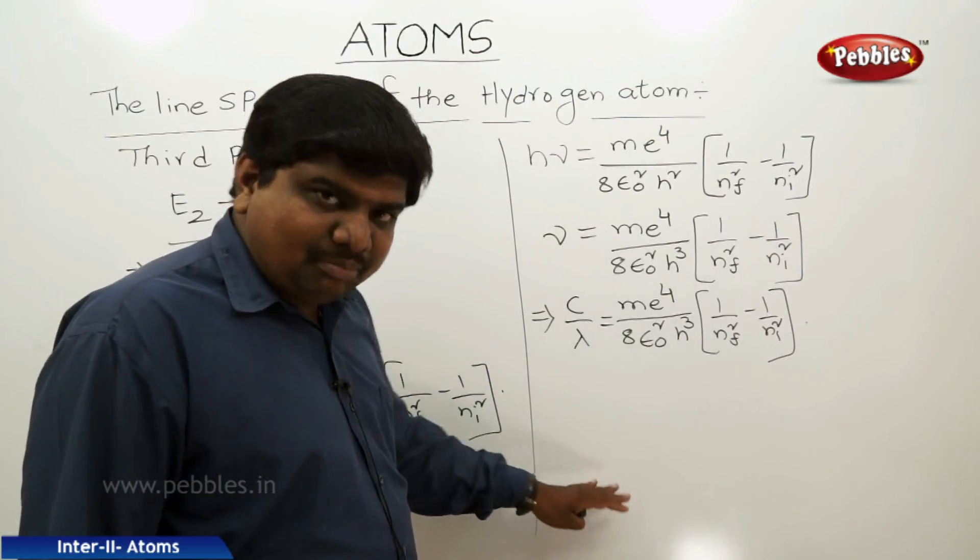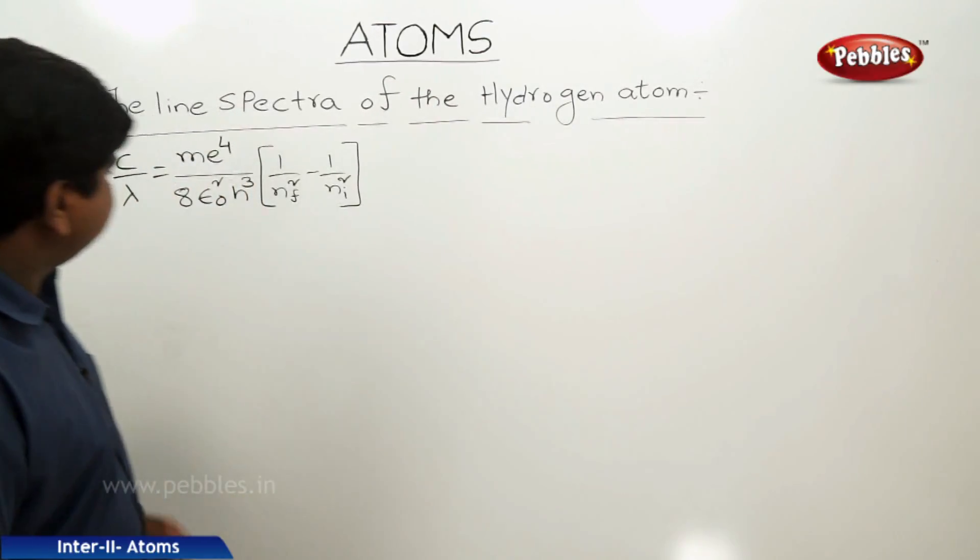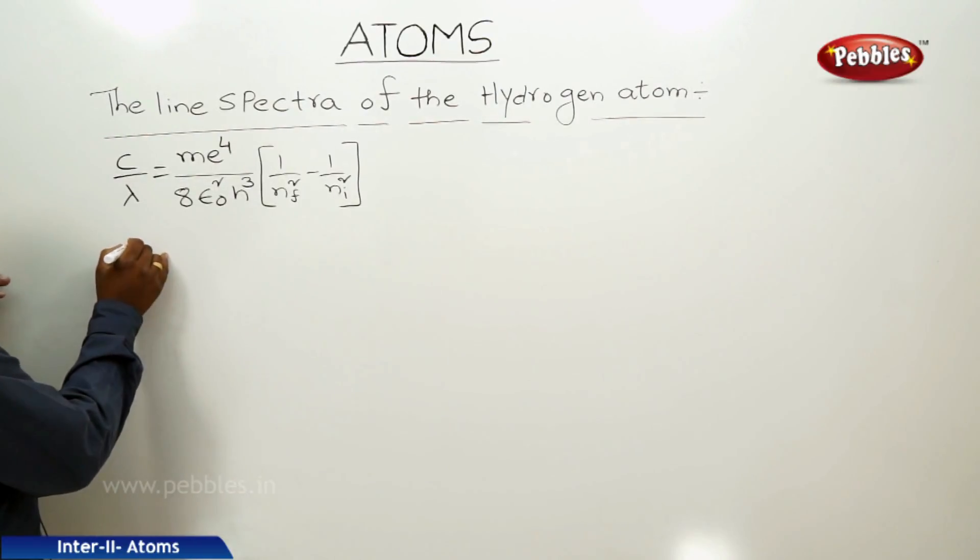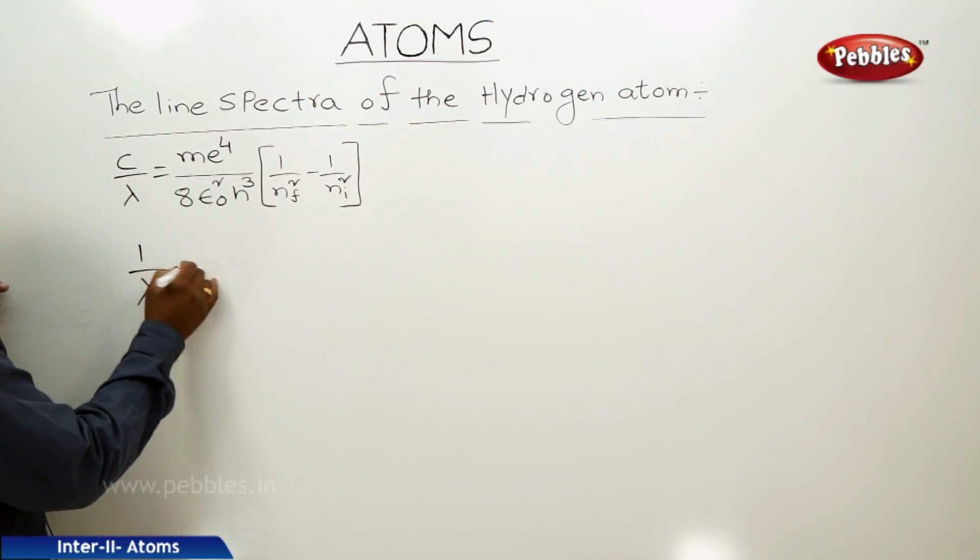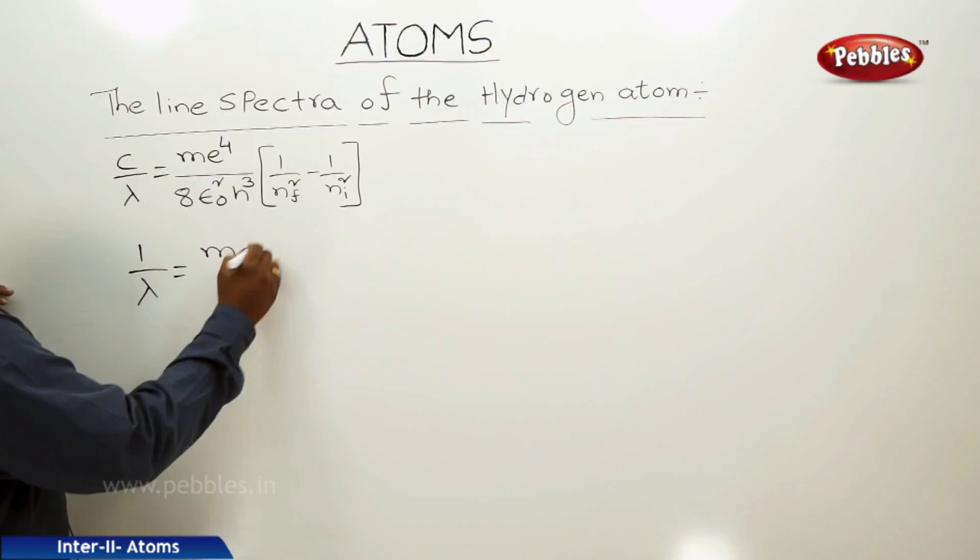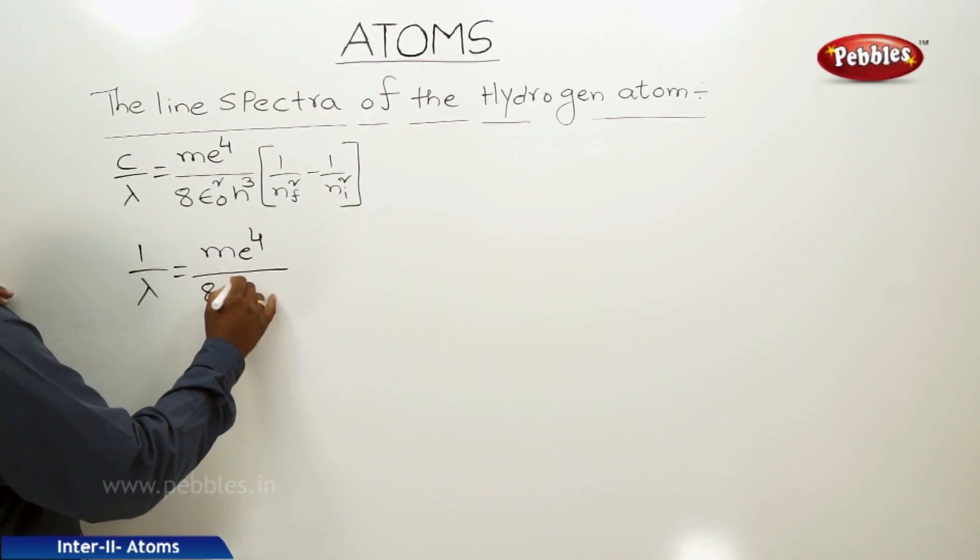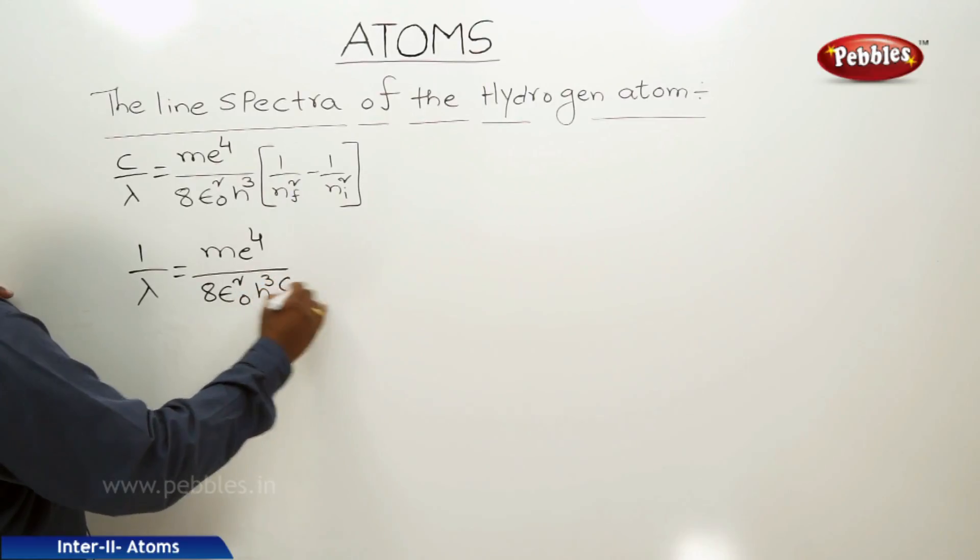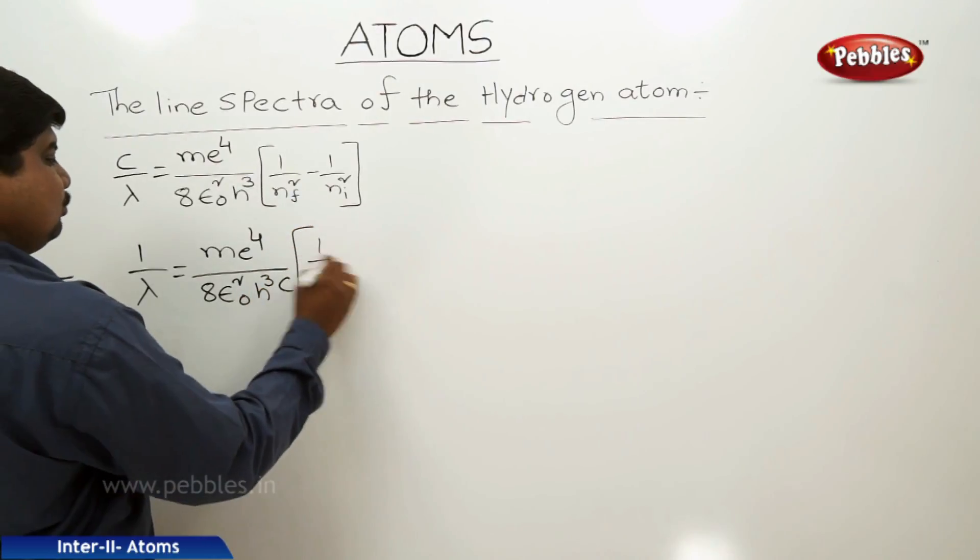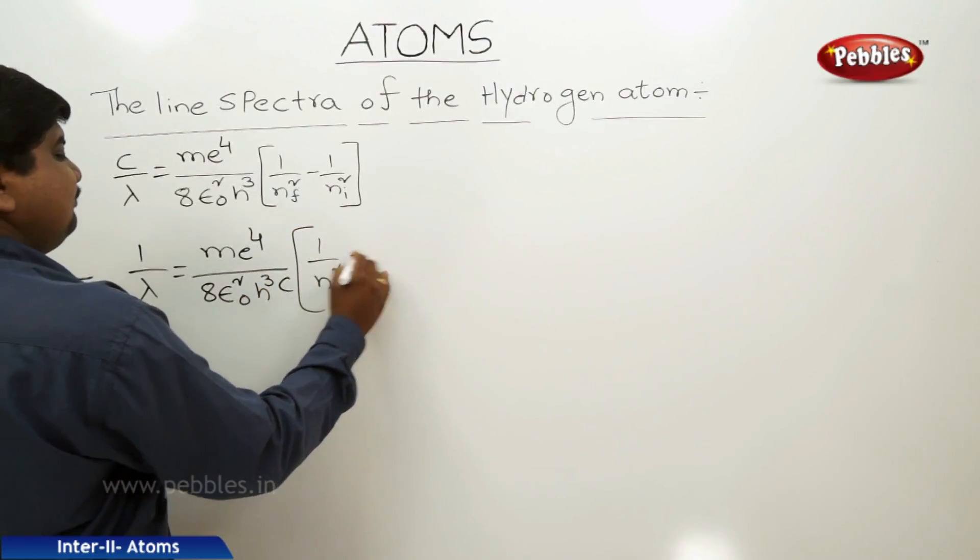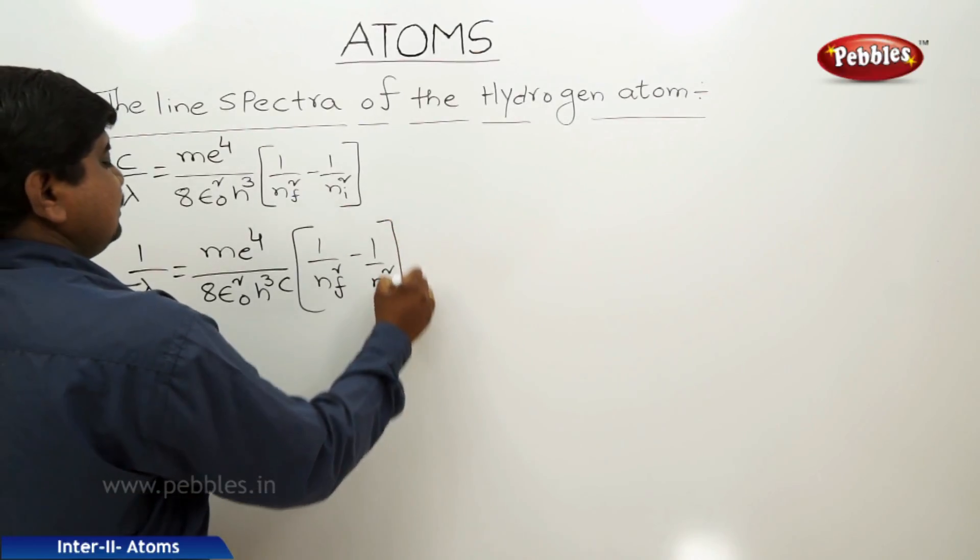After comparing, we can write this equation as 1 by lambda equals m e⁴ by 8 epsilon naught squared h cubed c into 1 by nf squared minus 1 by ni squared.